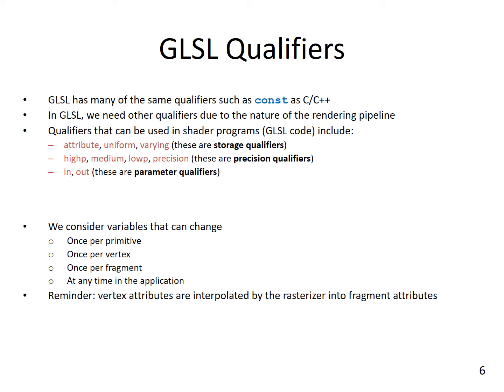A type qualifier is used in GLSL to modify the storage or behavior of global and locally defined variables. These qualifiers change aspects of the variable such as where they get their data from. We have similar concepts in Java, where they are known as modifiers rather than qualifiers — examples include private, public, and protected access control modifiers. In GLSL, these qualifiers are similar to C or C++, but we need some additional qualifiers due to the nature of the rendering pipeline.